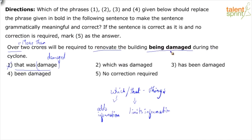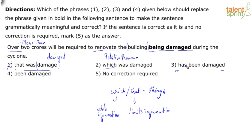In this context, 'that' cannot be used because 'damage' is not in the right form. However, 'which' seems to be correct — the right relative pronoun for a thing — because we're talking about the building, which is a thing. So it should be 'which was damaged during the cyclone.' When I say 'has been damaged,' the relative pronoun is missing. So option three — using 'which' without the relative pronoun — is incorrect because the relative pronoun is missing.